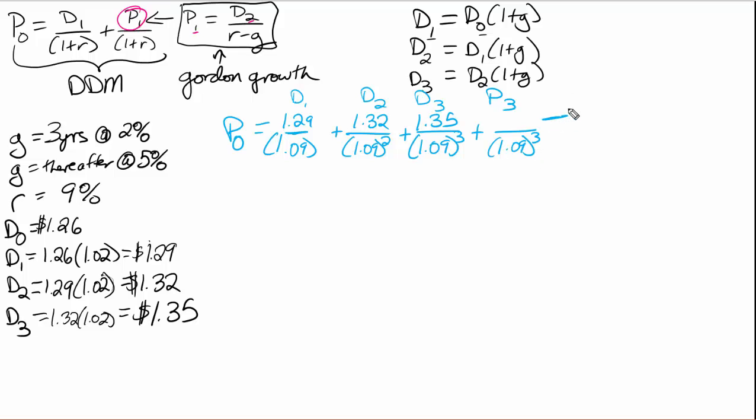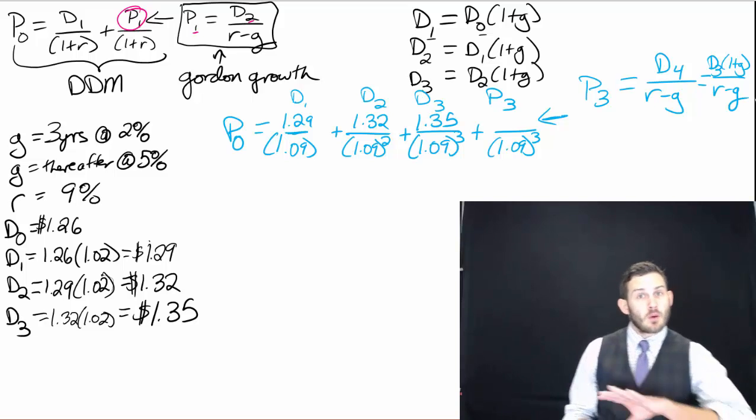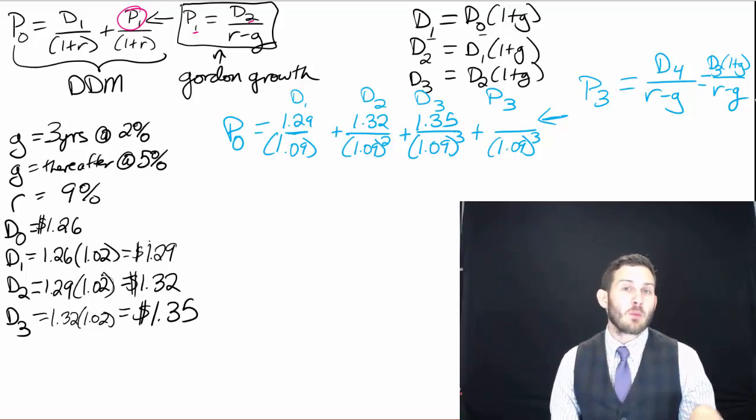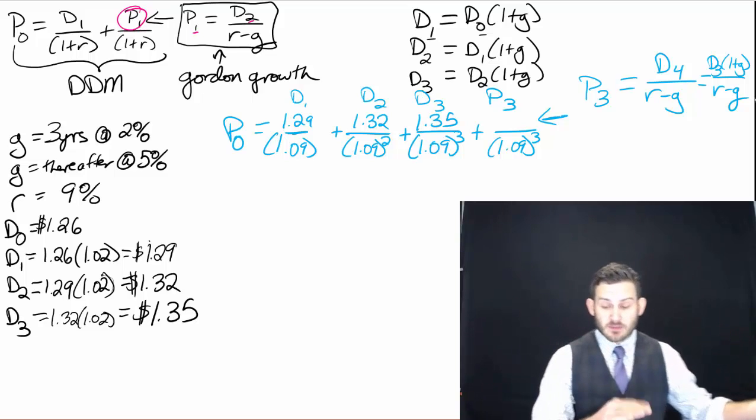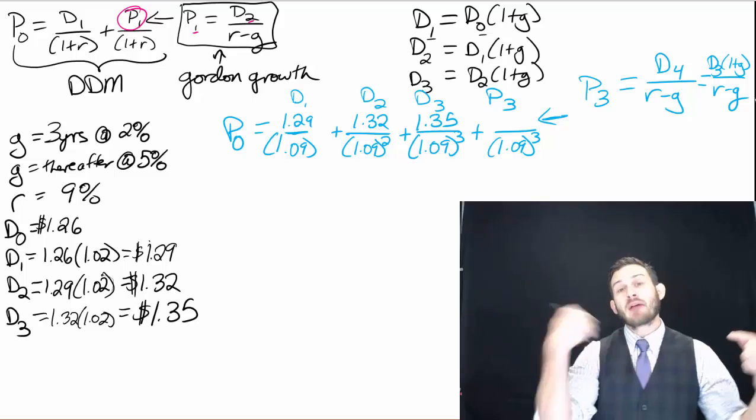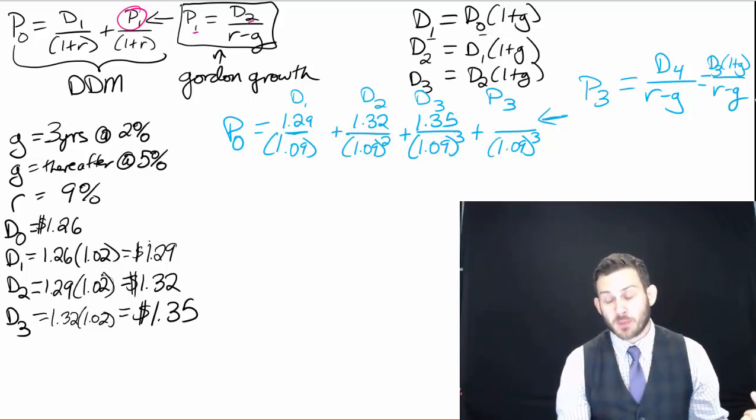And so what we're having to do here is we're having to figure out how do we come up with P3. So we know that P3 is going to be equal to lagging that dividend back one more period is going to be equal to D4 divided by R minus G, which we know this is also equal to D3 times one plus G divided by R minus G. So if we don't have D4, we have to take the previous dividend, which is that D3, and then we have to grow that by that growth period.